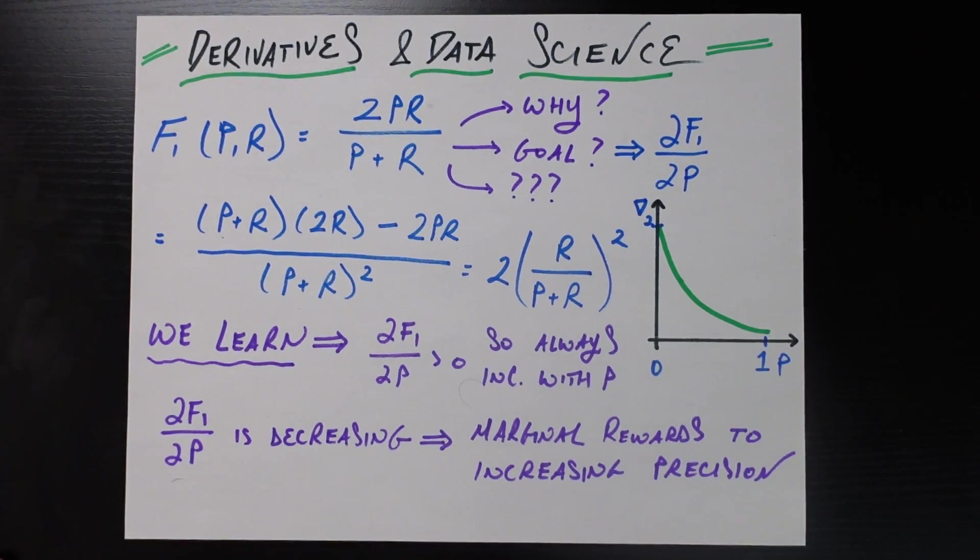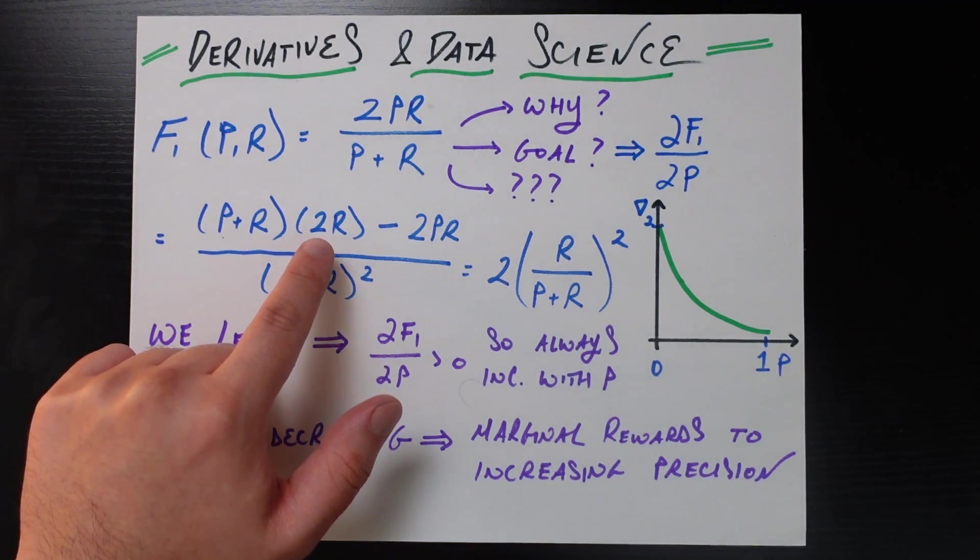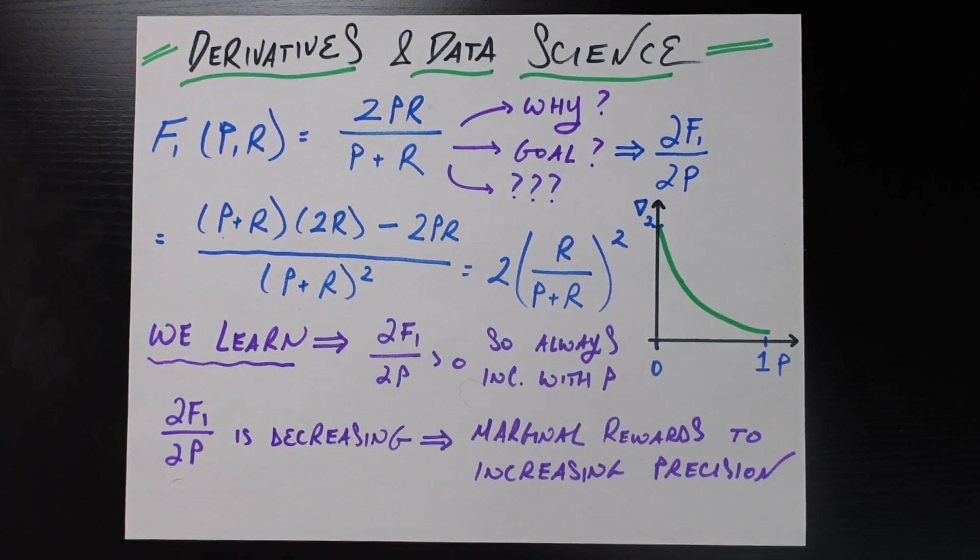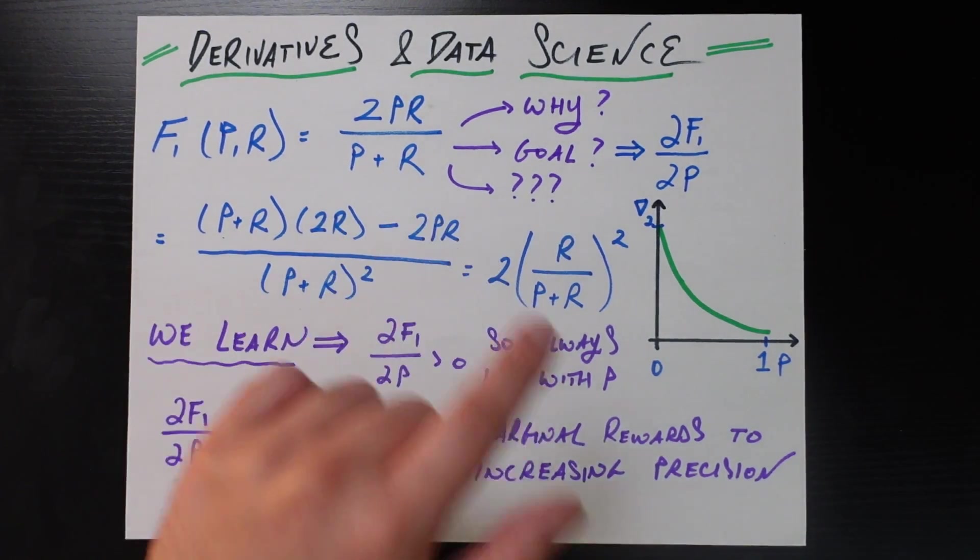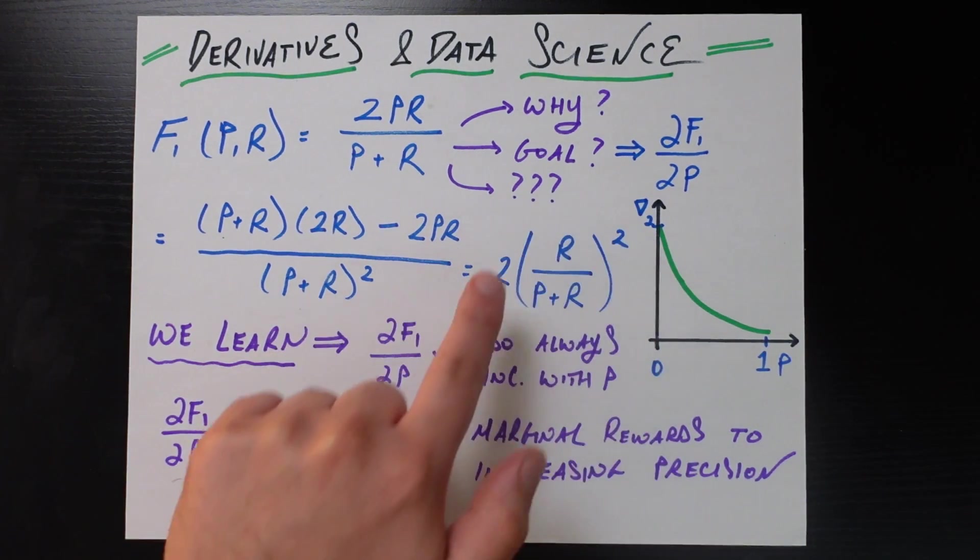It's pretty easy. We fall back on our quotient rule of derivatives, however back you learned that. So it's the bottom times the derivative of the top with respect to P minus the top times the derivative of the bottom with respect to P all divided by the denominator or the bottom squared. And it actually simplifies quite nicely to look like this form right here.